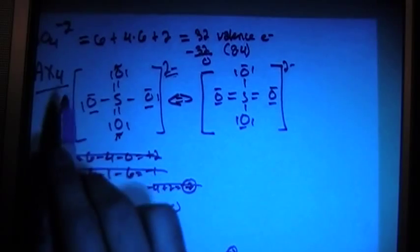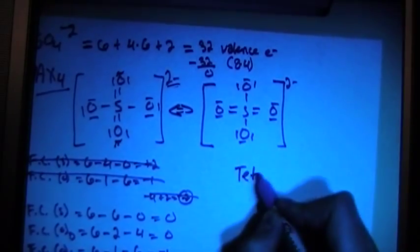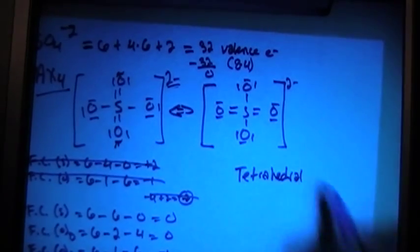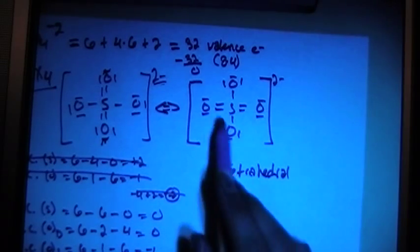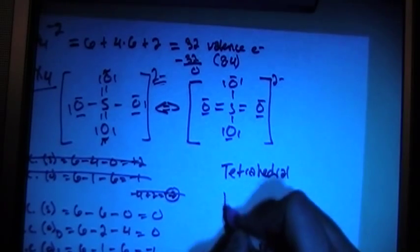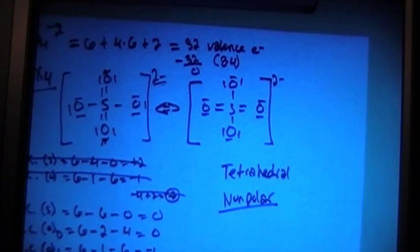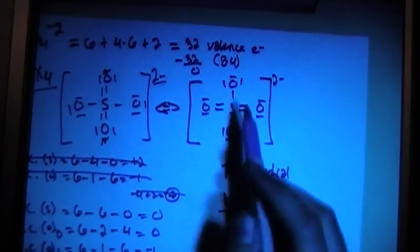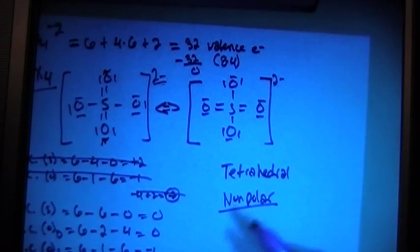And we can go ahead and look now back at the AX4, the shape. That means it's going to be a tetrahedral shape. And because each of the bonding atoms is the same, that means this is going to be a non-polar molecule, because the electronegativity for each bonding atom is the same. So it's going to end up canceling each other out, giving you a net dipole moment of zero, which means non-polar.